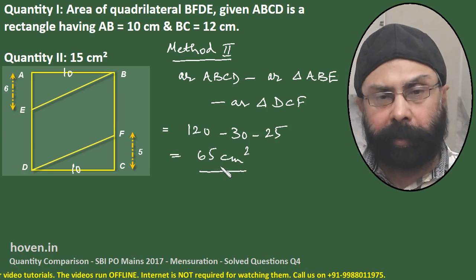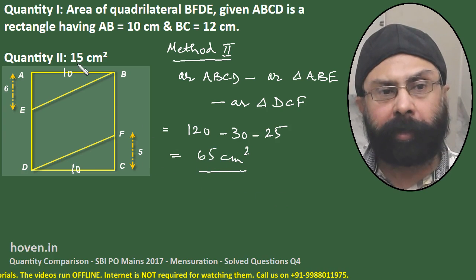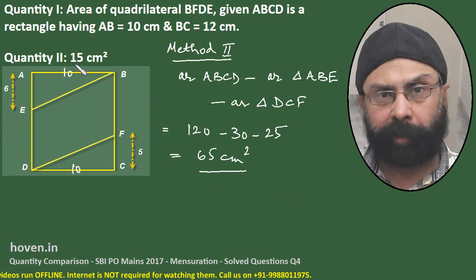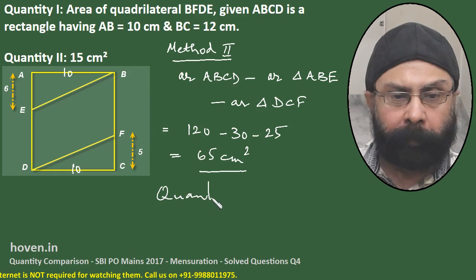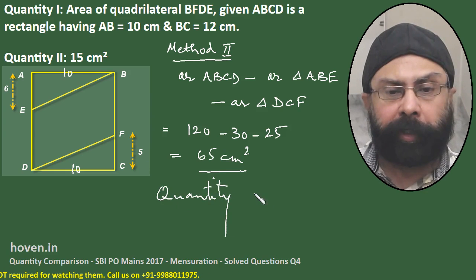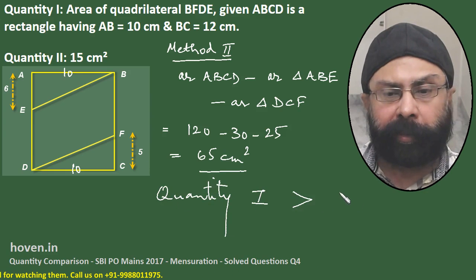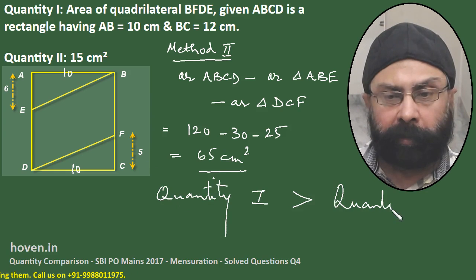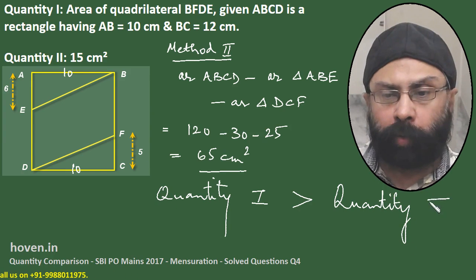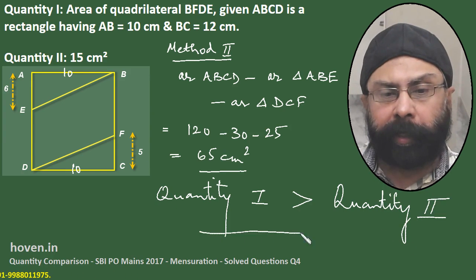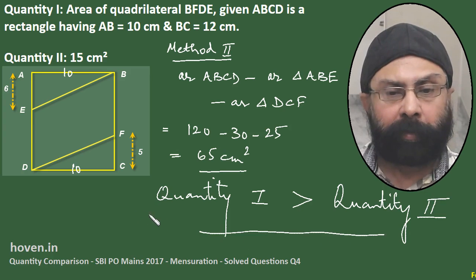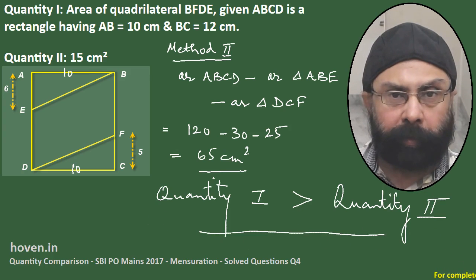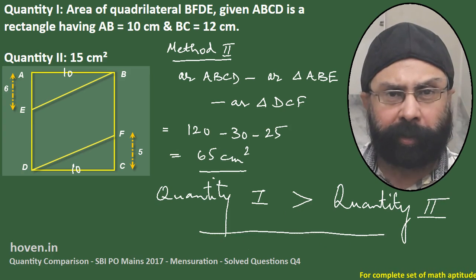This is the area we have found. In comparison to 15 square centimeters, we can say that quantity 1 is greater than quantity 2, which is the actually required answer. This is how we can take it up — I have put it in a separate video because this was a single question.